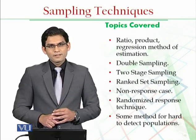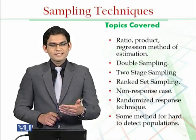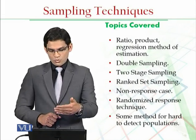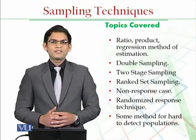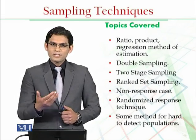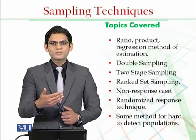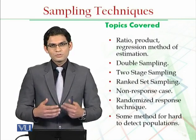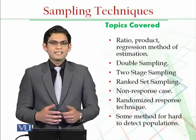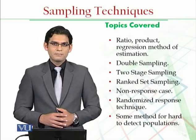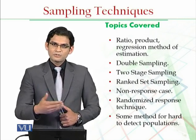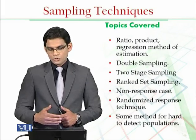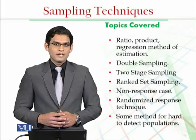We discussed double sampling. Double sampling is applicable in the case of ratio, product, and regression methods of estimation when the population mean of the auxiliary variable is not given in advance. We may use double sampling to estimate the population mean of the auxiliary variable, and then utilize this estimate in the ratio, product, and regression estimators.